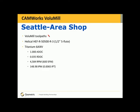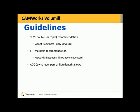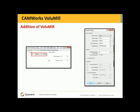A Seattle-area shop used Volume Mill on titanium with a one-inch axial depth of cut, thirty-five thousandths radial depth of cut, six hundred surface feet per minute, and six and a half thousandths inches per tooth. General guidelines for Volume Mill: surface feet per minute — you can double or triple the recommendation and adjust from there, likely upward. Inches per tooth — maintain the recommendation; upward adjustments are likely but never downward. Axial depth of cut — whatever the part or flute length allows. Radial depth of cut — six percent for harder materials, forty percent for softer materials. Let tool life or cycle time priority be your guide.